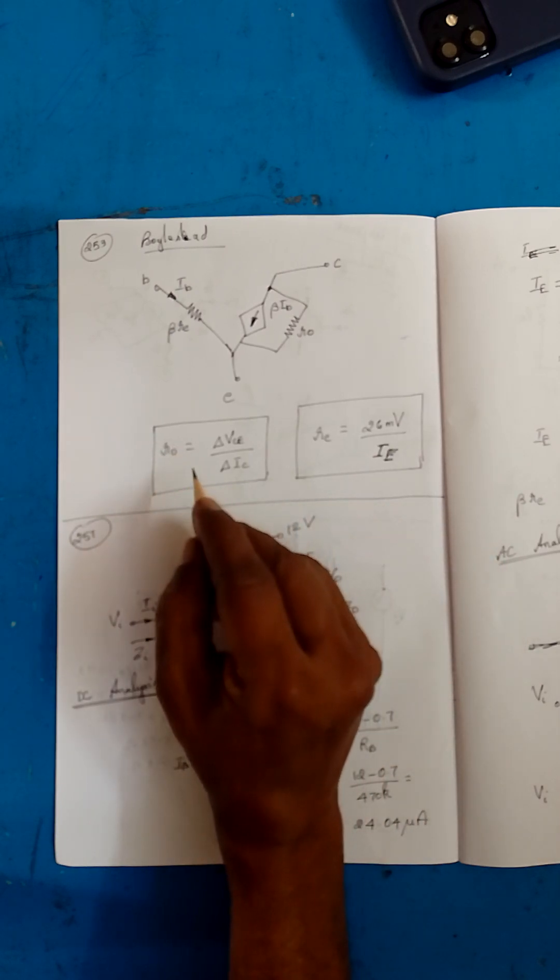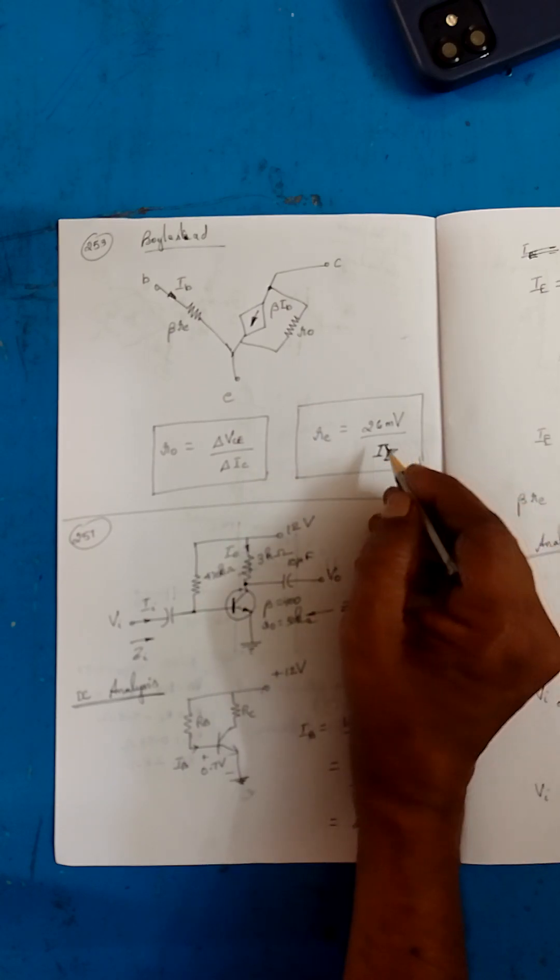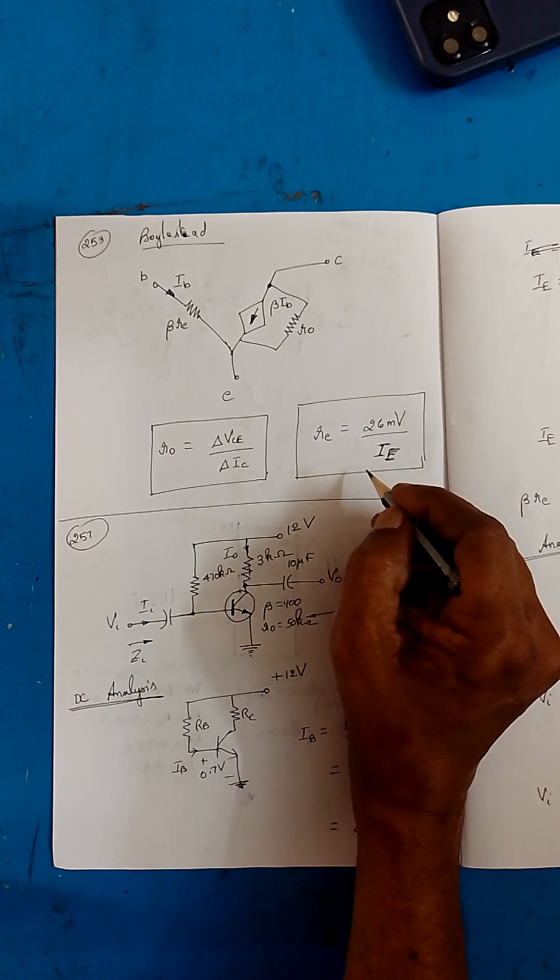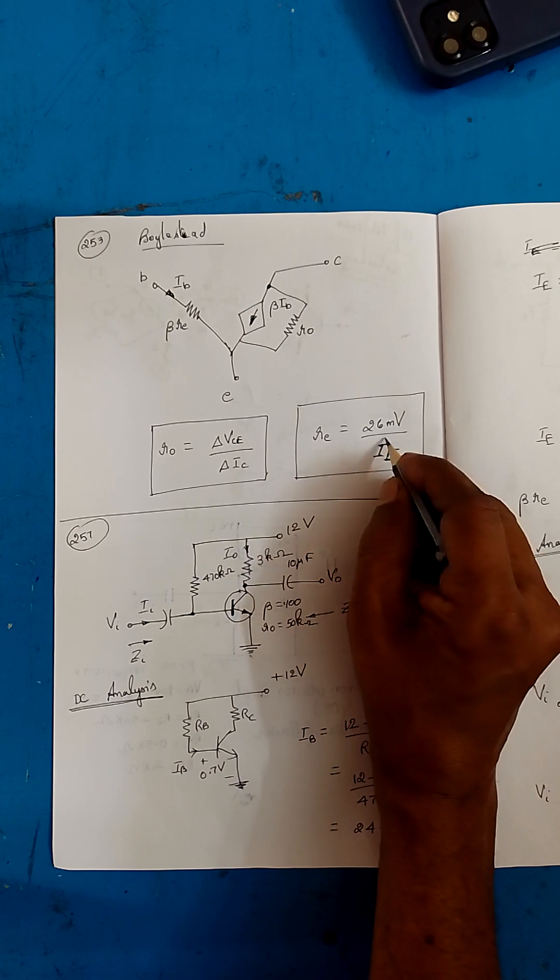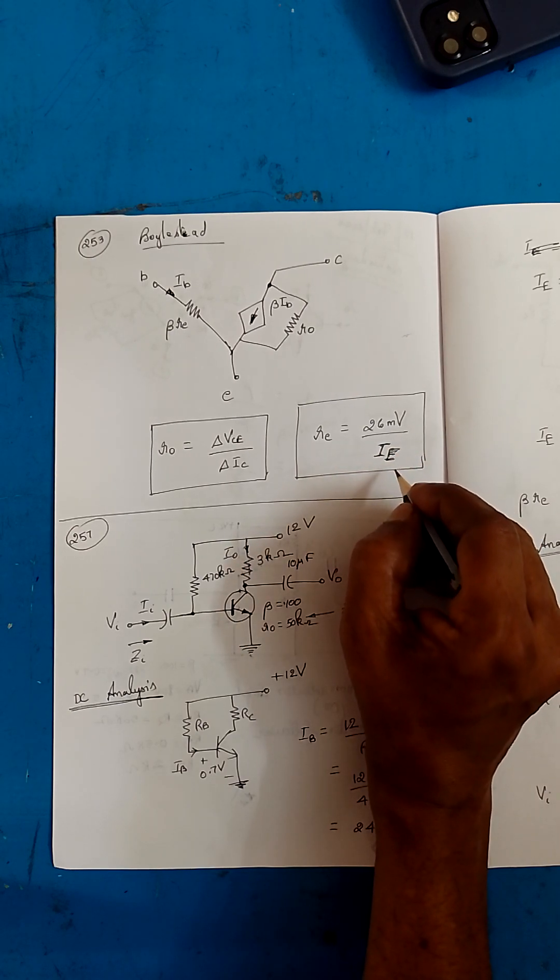Generally this will be given in the question itself. Now coming to re, at room temperature the value is 26 millivolts by IE. This capital IE you have to find with DC analysis, not AC analysis. You have to be very careful.